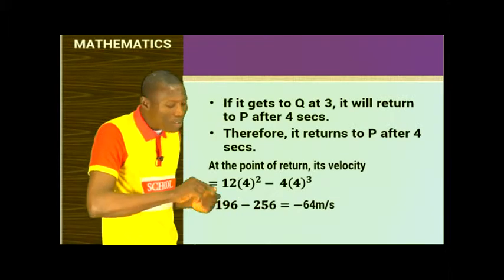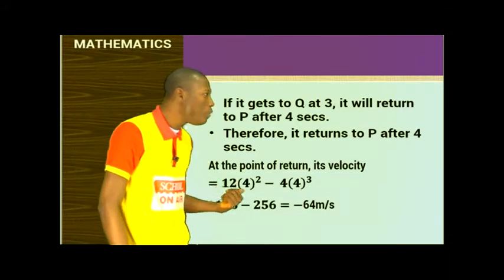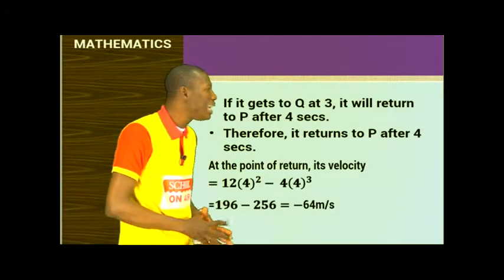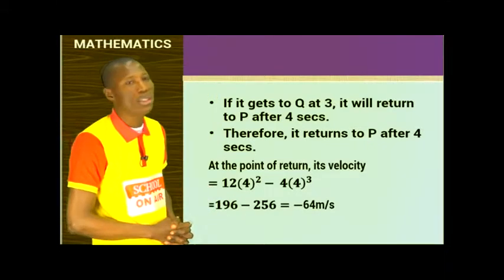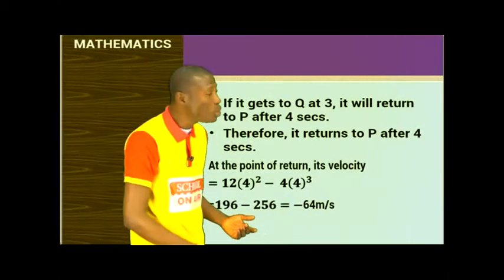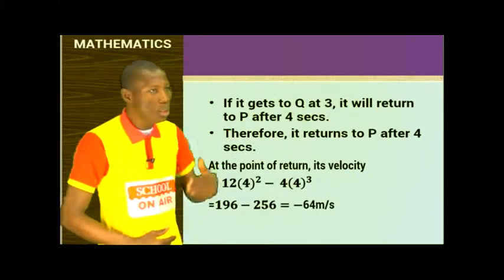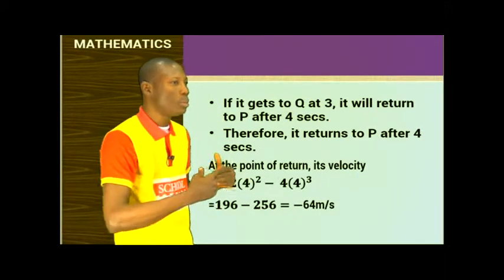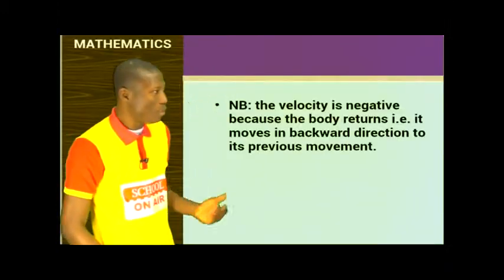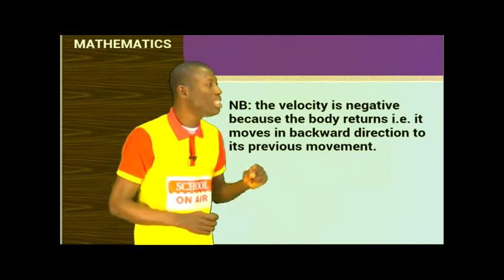After t equals 4: V equals 12(16) minus 4(64), which equals 192 minus 256 equals -64 m/s. The velocity is negative because the body is returning — it moves from P to the turning point with positive velocity, but on return it has negative velocity. So the velocity at P on return is -64 meters per second.